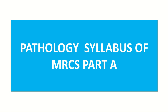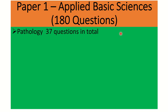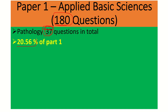Hi everyone, welcome to another lecture. Today our topic is the pathology syllabus of MRCS Part A. First, let's look at pathology in Paper One. The MRCS Part A is divided into Paper One and Paper Two. Paper One is total 180 marks and Paper Two is 120 marks. Paper One covers applied basic science, and one of the subjects is pathology, which has a total of 37 questions — that means 37 marks from pathology out of 180, which is 20.56 percent of Paper One.